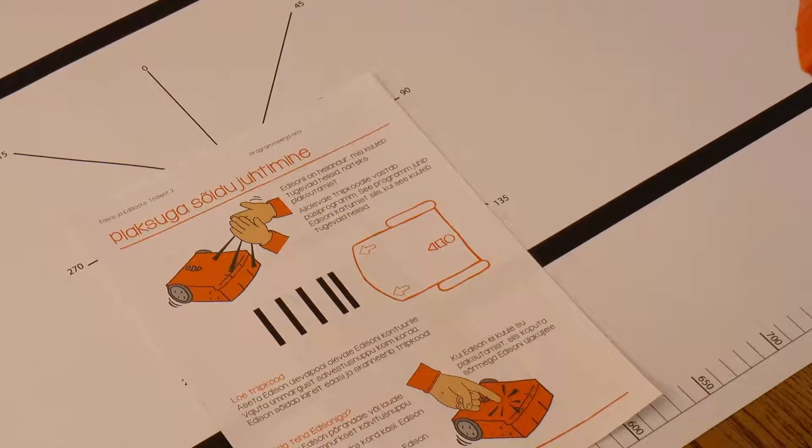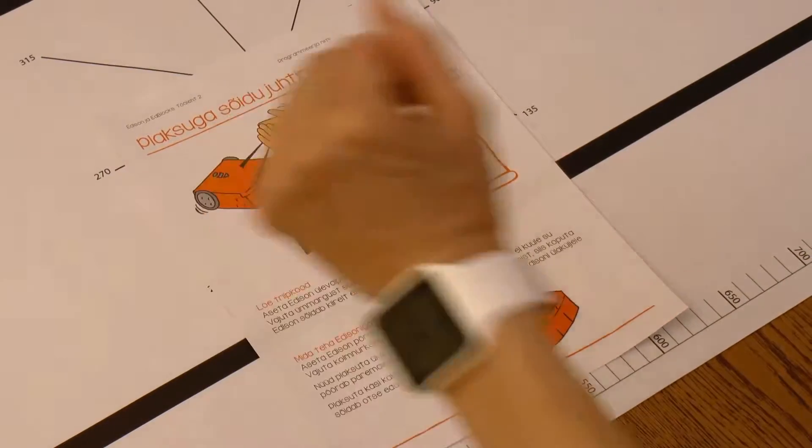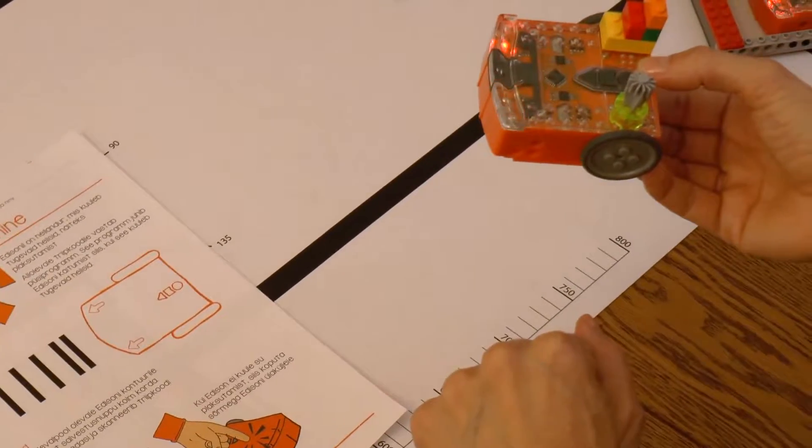Clap controlled driving is a program where when hearing one clap the robot turns right and hearing two claps it drives a certain distance forward.